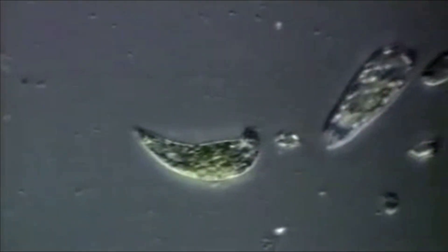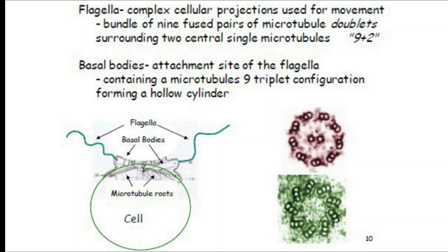Coming to flagellation: flagella are one or many, of equal size, equal length, and same type — that is why the group is called Isokontae. Here you can see the nine-plus-two arrangement of flagella and the triplet configuration of basal bodies. In the case of flagella, there are nine fused pairs of microtubule doublets surrounding two single central microtubules. In the case of the basal body, which is the connecting region of flagella to the cell, a nine-triplet configuration is seen — there are no central fibrils, but nine triplet fibrils.